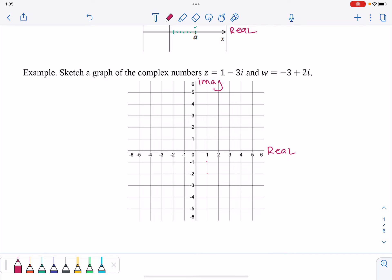So right one and then down 3. And then my point here is going to be the location of the complex number Z. When I go to graph W, I have negative 3. So left 3 and then up 2 for the 2I. And then this point in the second quadrant here is going to be the location of the complex number W.